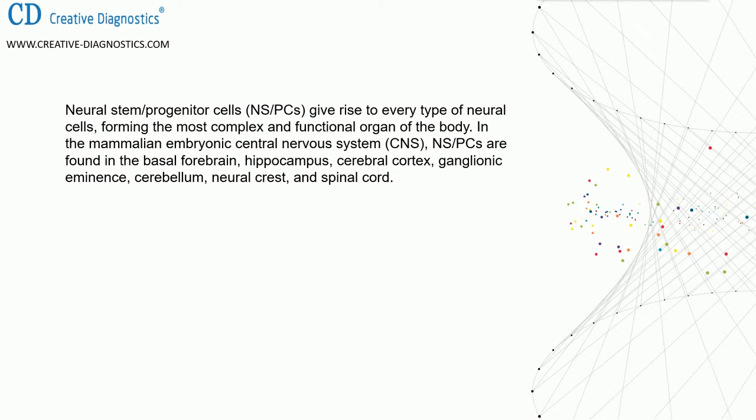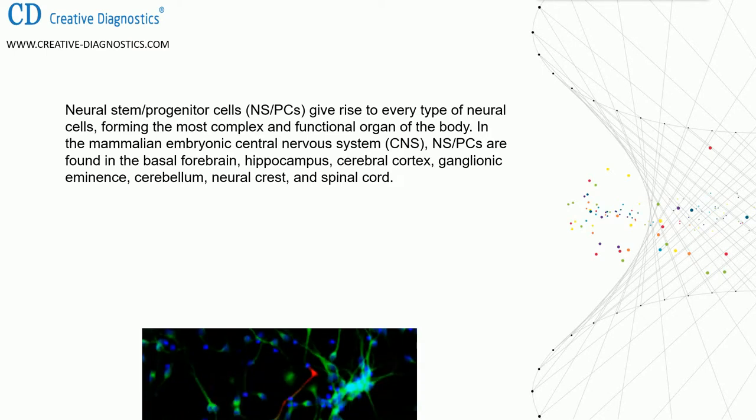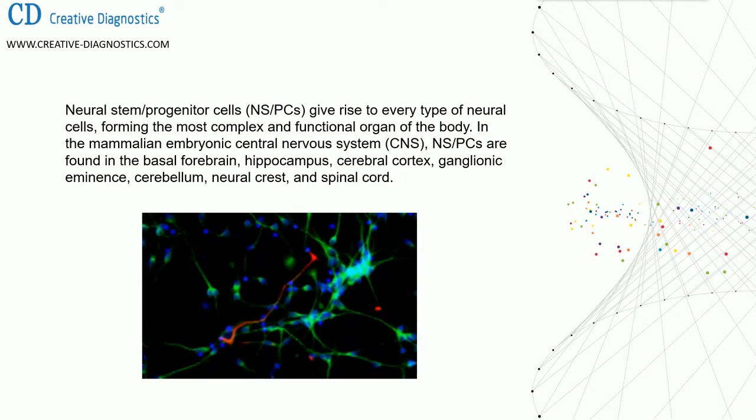In the mammalian embryonic central nervous system, neural stem cells are found in the basal forebrain, hippocampus, cerebral cortex, ganglionic eminence, cerebellum, neural crest, and spinal cord.